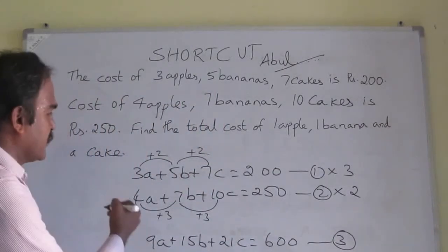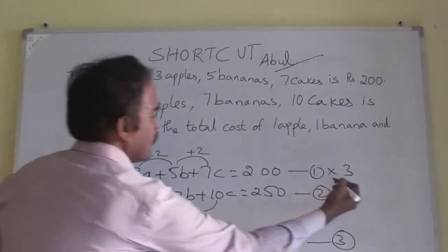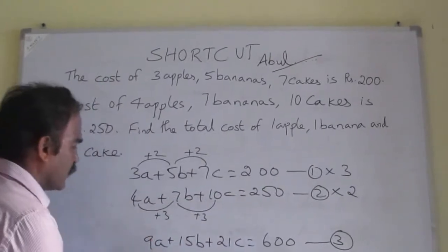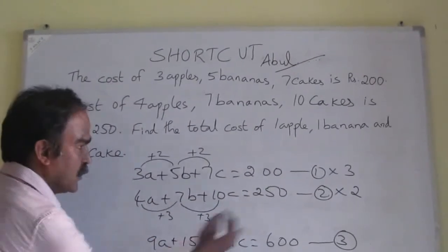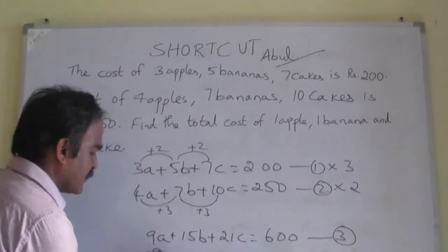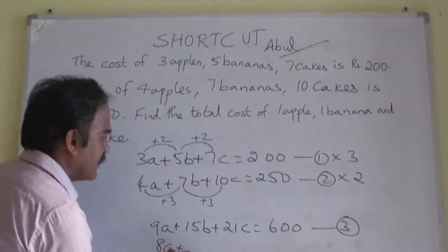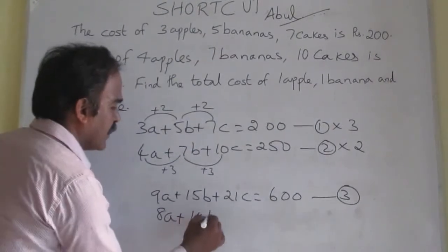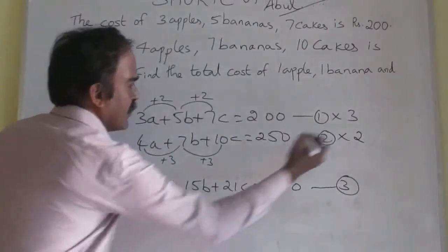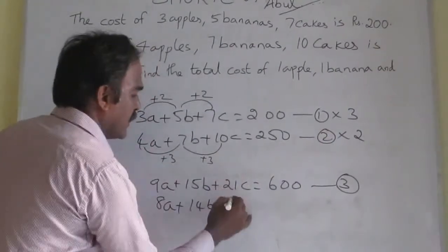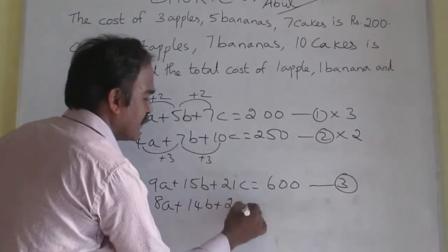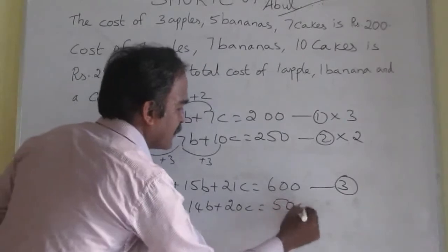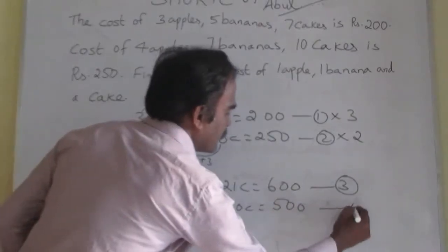Now let us do the second one. This is the second equation multiplied by 2. 4A into 2 gives 8 apples, 14 bananas, and 20 cakes is Rs. 500. This is equation 4.